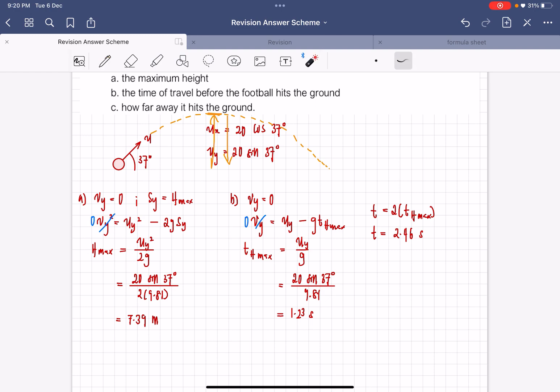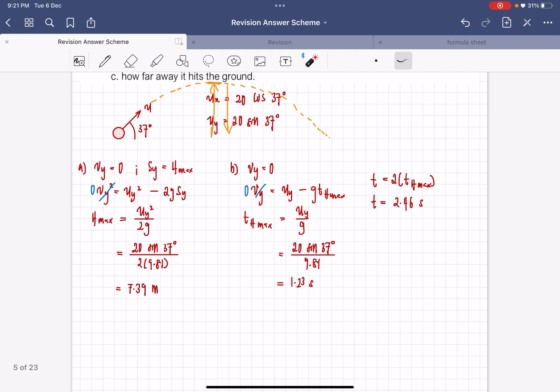So I hope you understand. The bit that you need to understand is the time of travel will always be equal to twice the time to reach the maximum height for projectile motion with an angle like this, where the journey is like this. If it's different, then it's another case.